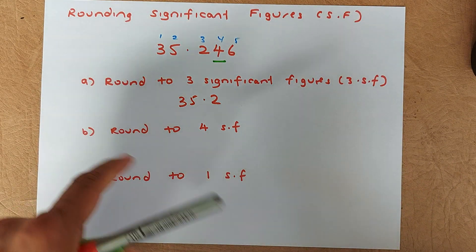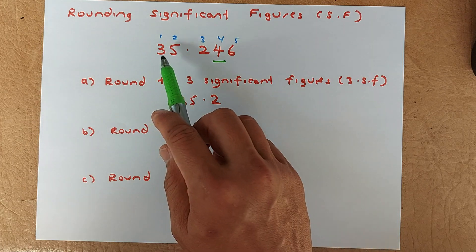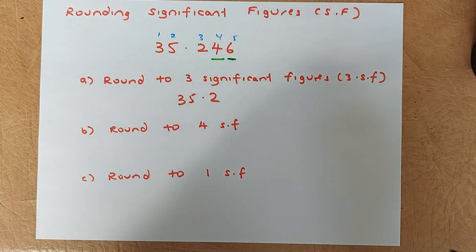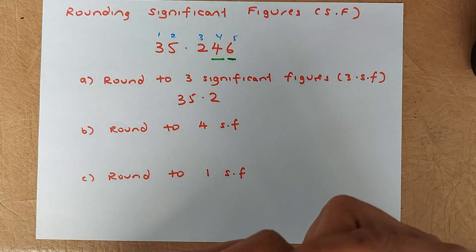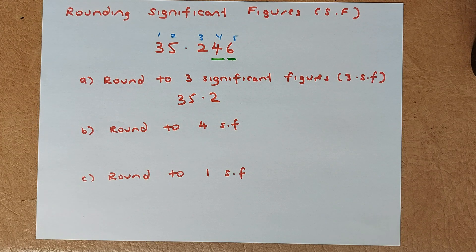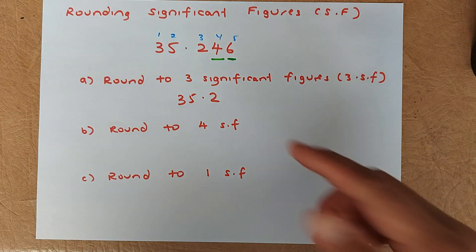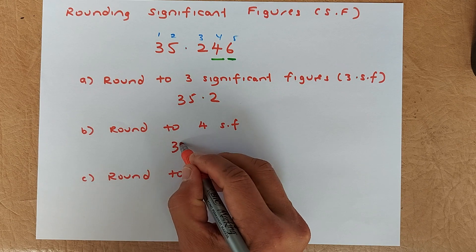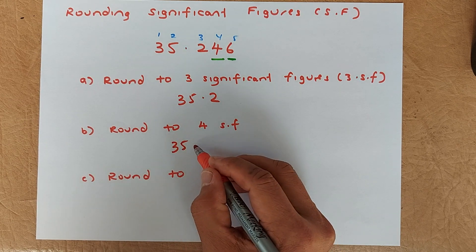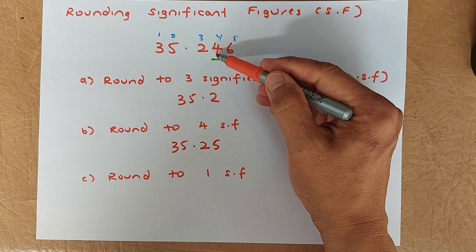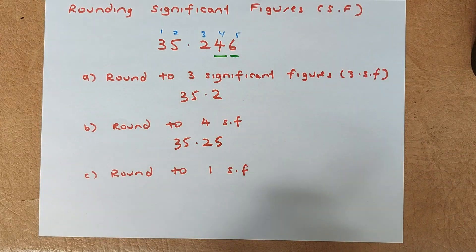Now question B: round to four significant figures. The first four significant figures are three, five, two, four — so you look at the fifth number, which is six. Six is more than five, so you round up the four to five. The answer rounded to four significant figures is 35.25.